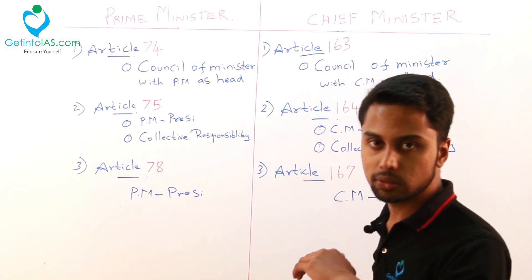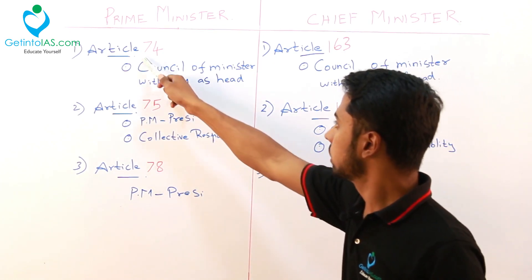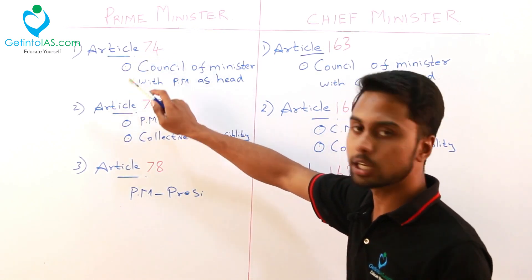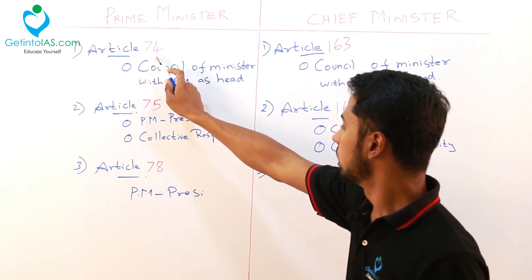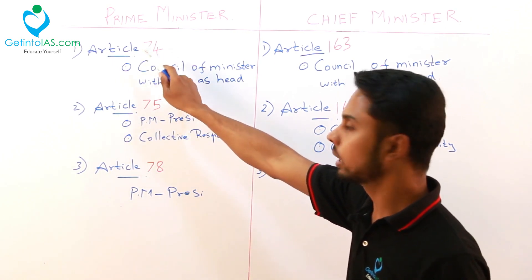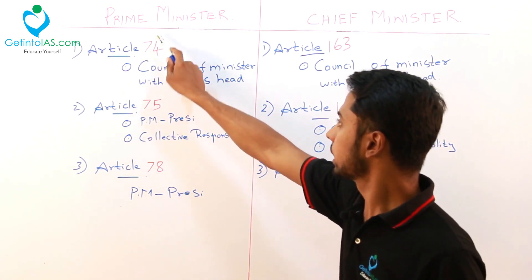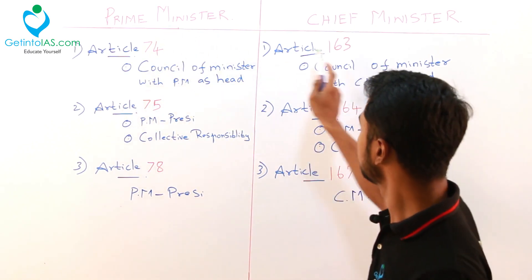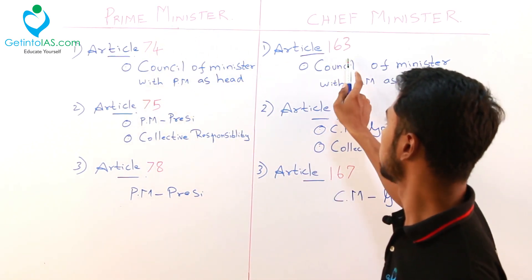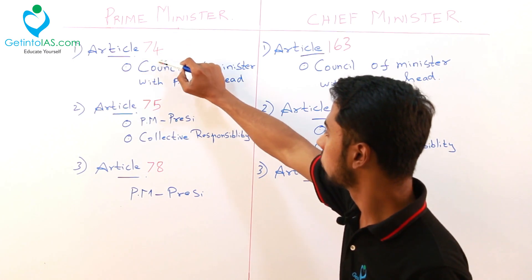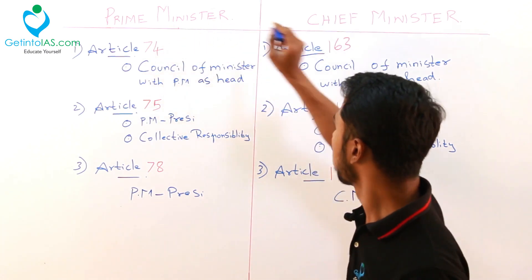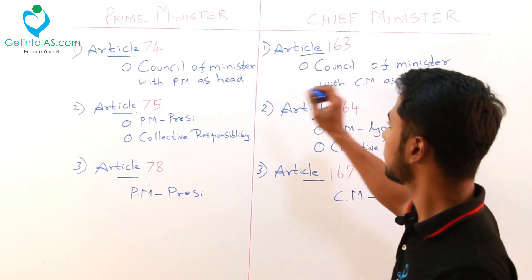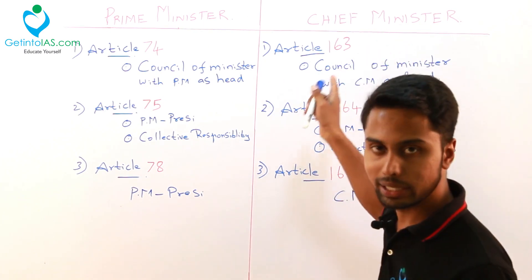How can you remember this 163? Take article 74 and take its respective digits, 7 and 4. Minus 1 with both the digits: 7 minus 1 is 6, 4 minus 1 is 3. Then add 1 to that number. So it is 163. That is the same article for the state.